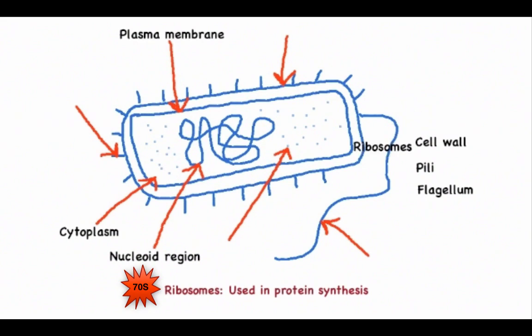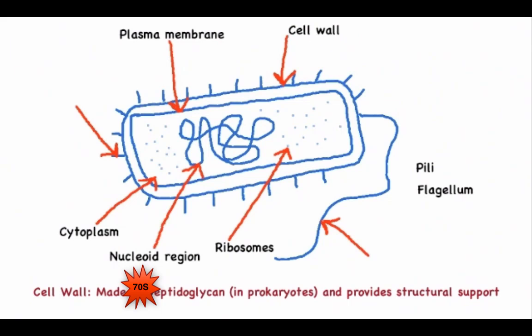The ribosomes, represented by small dots, are used for protein synthesis. The cell wall provides rigidity and strength to give structural support for the cell and prevents overexpansion when water enters the cell.